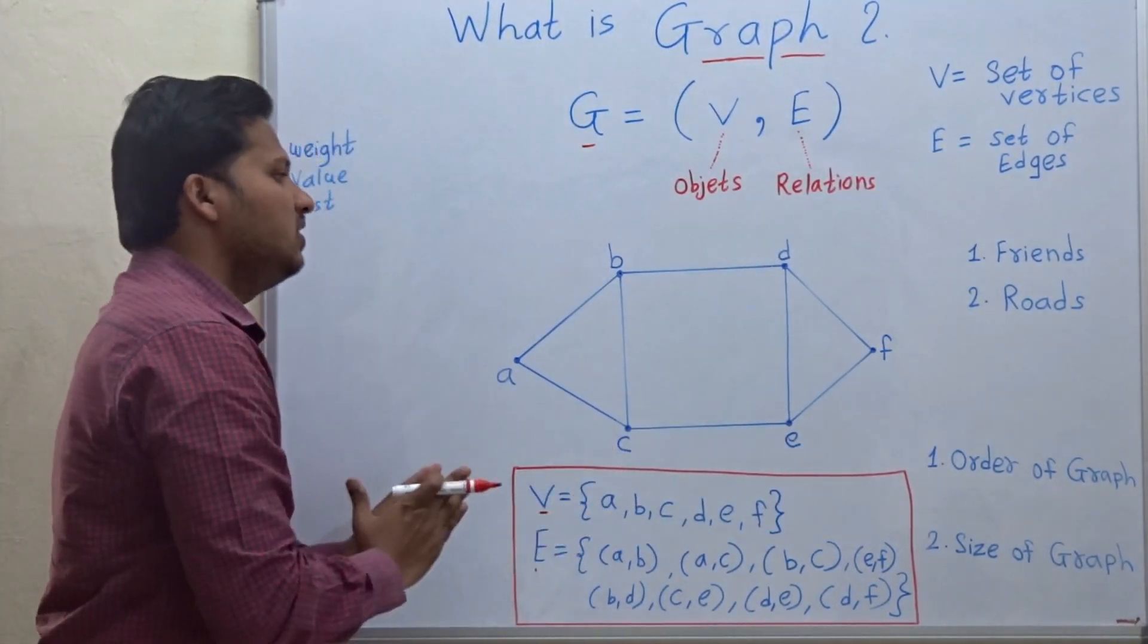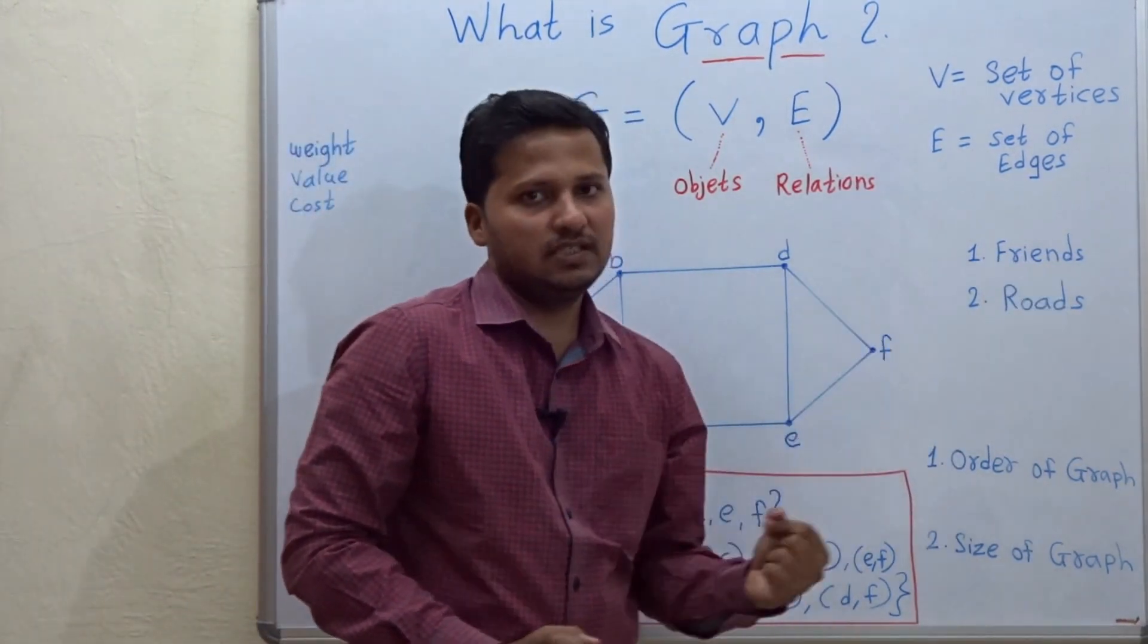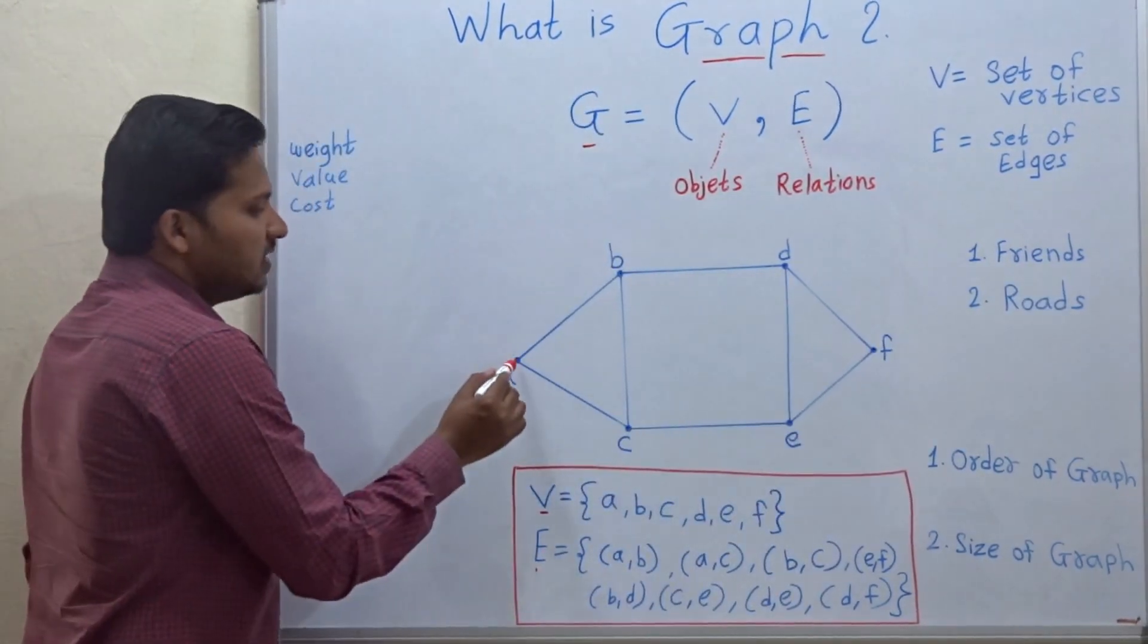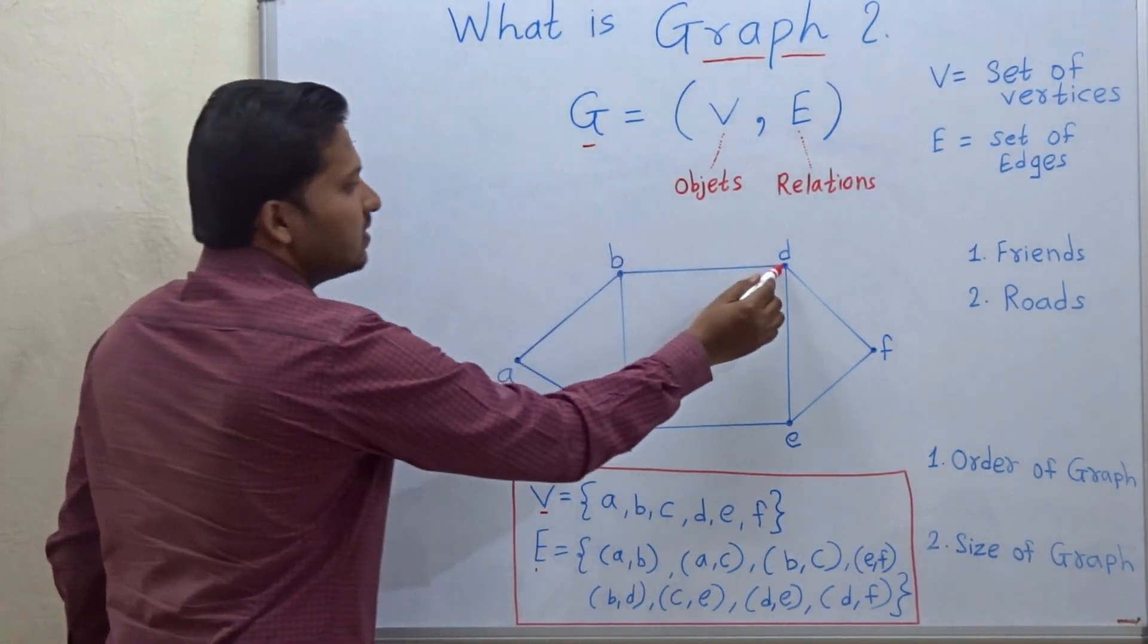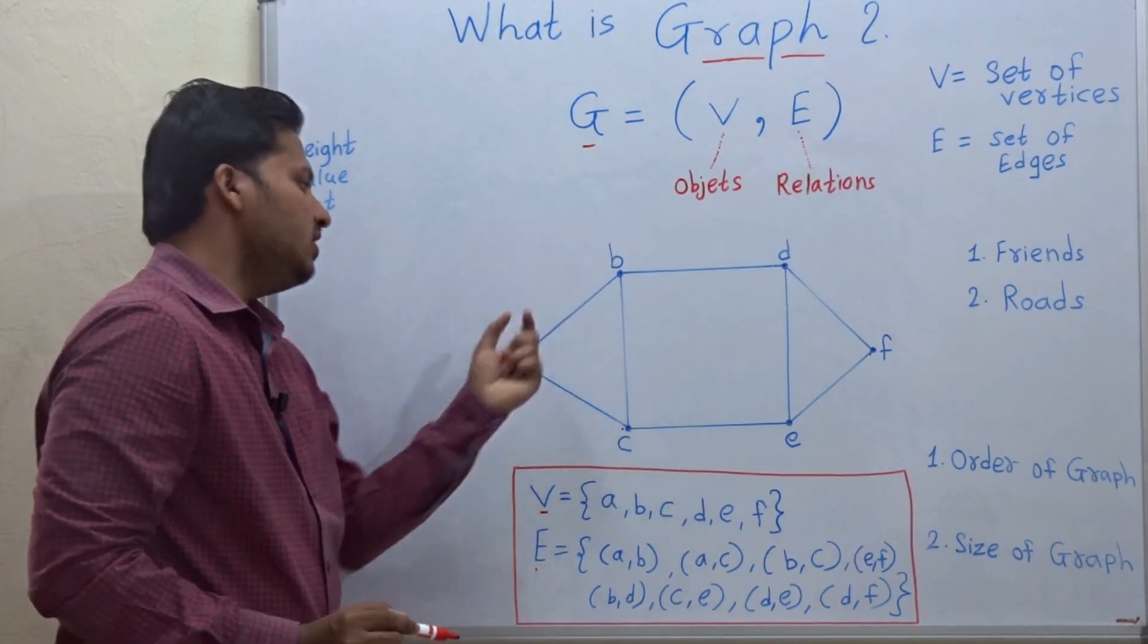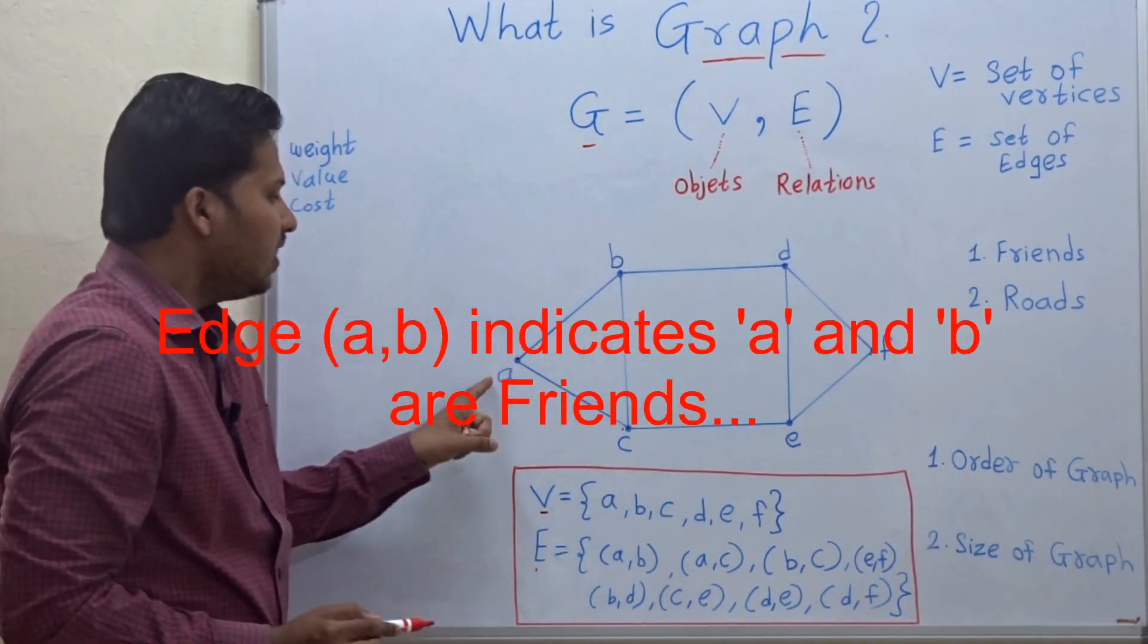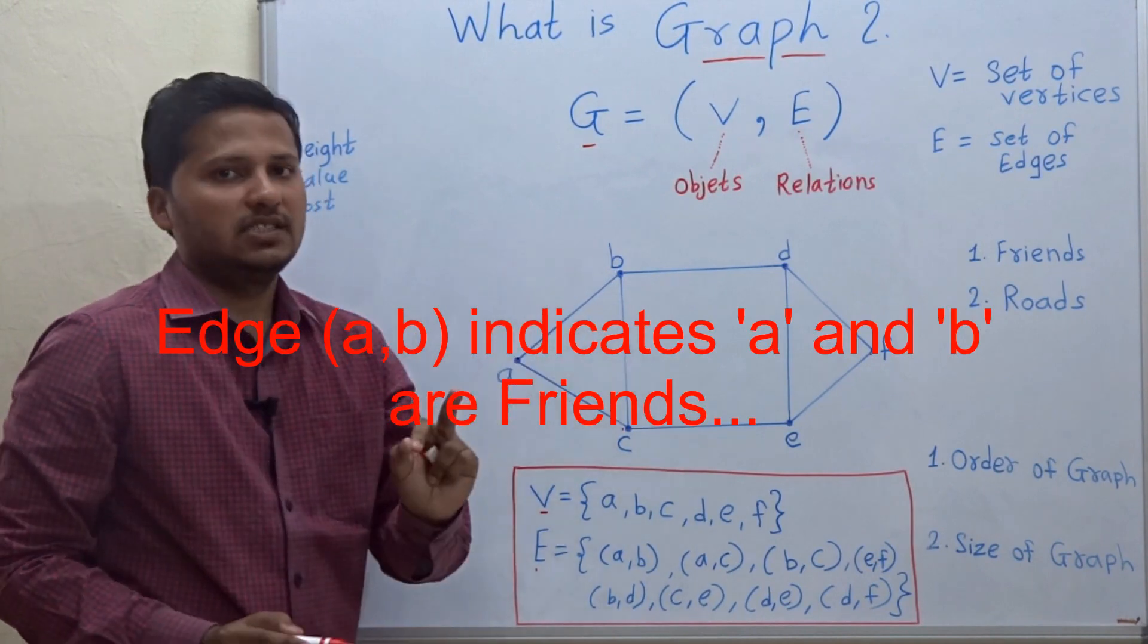So what does this graph mean in the real world? Let's take an example of friends. Suppose these vertices are the people in the world. So edge a, b indicates that a and b are friends.